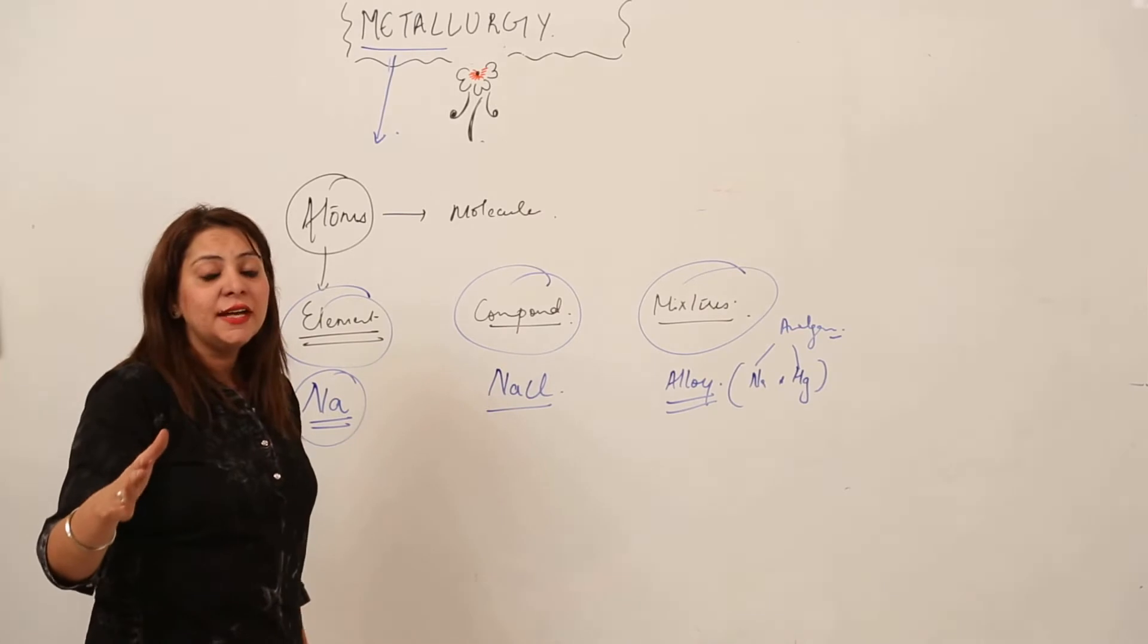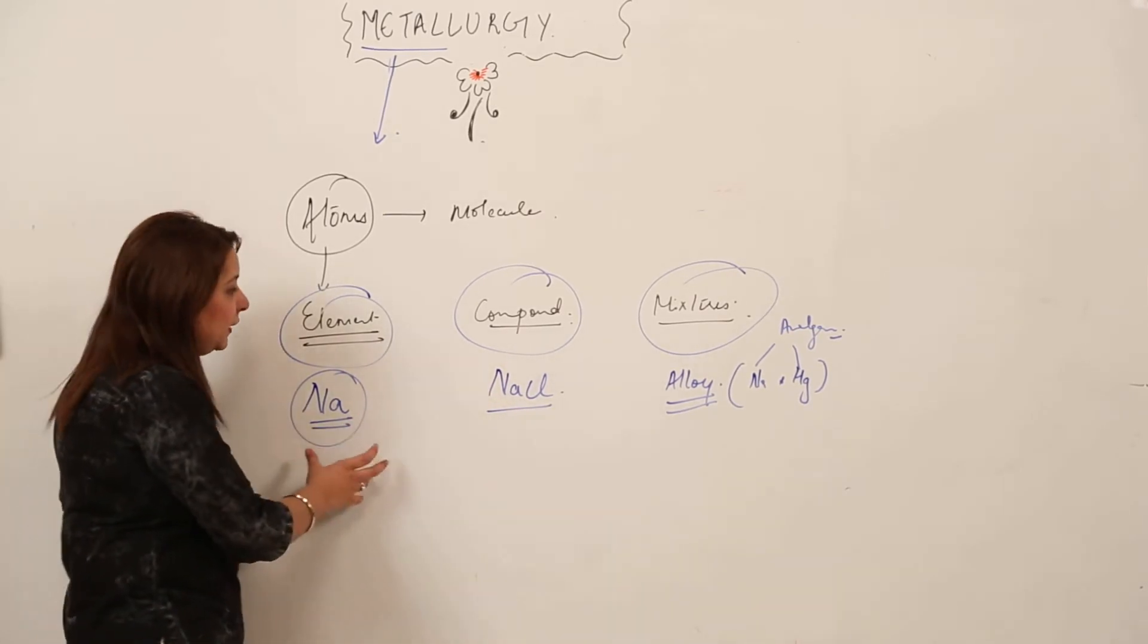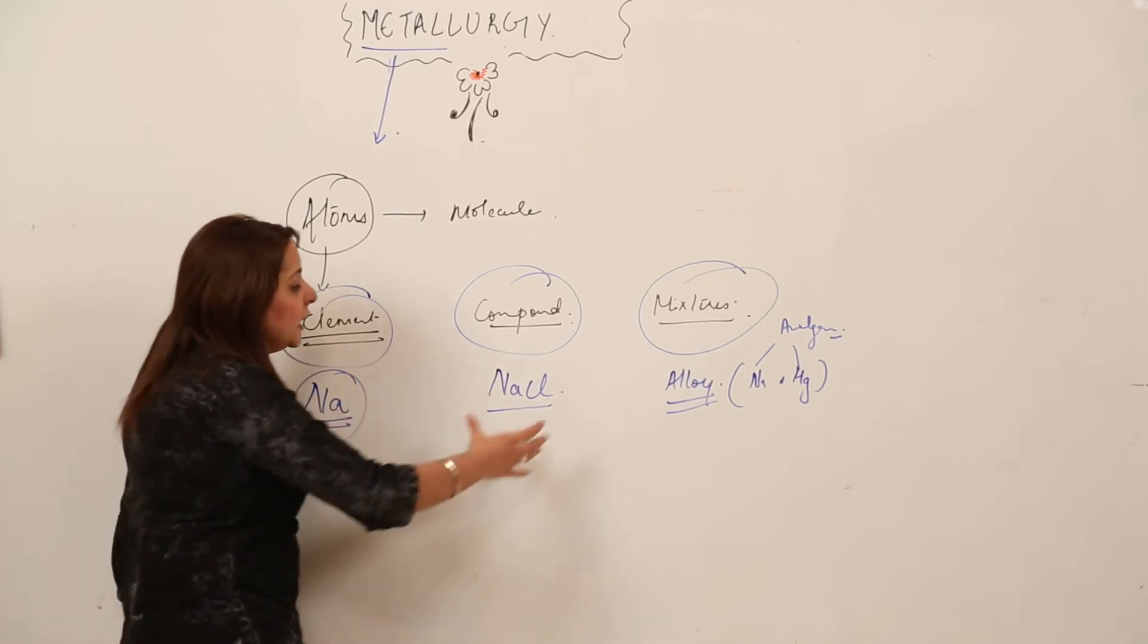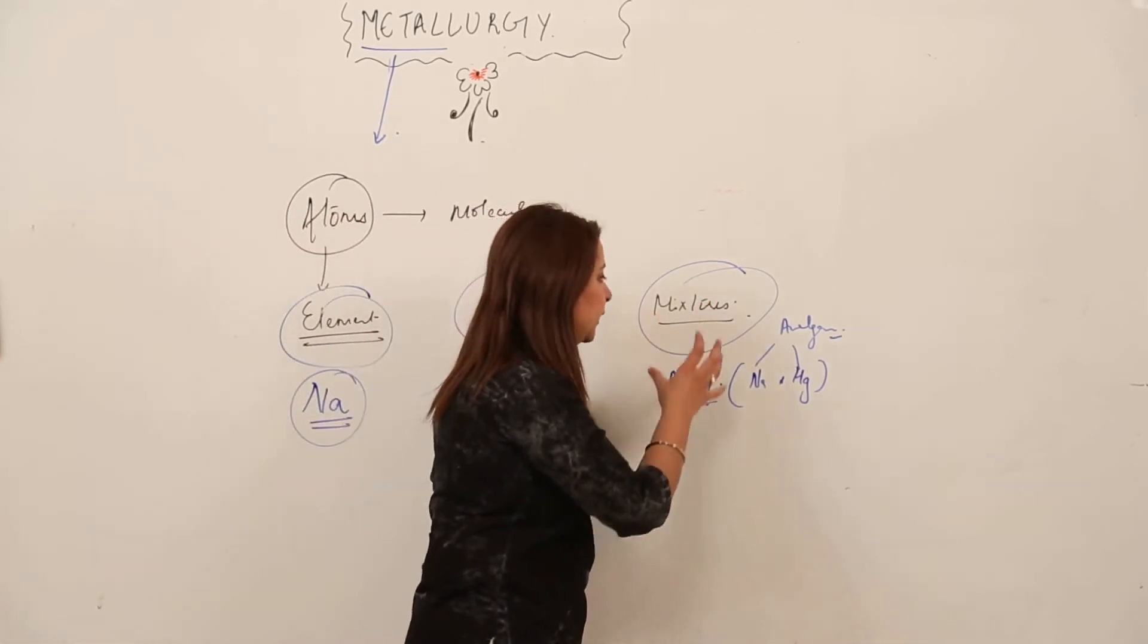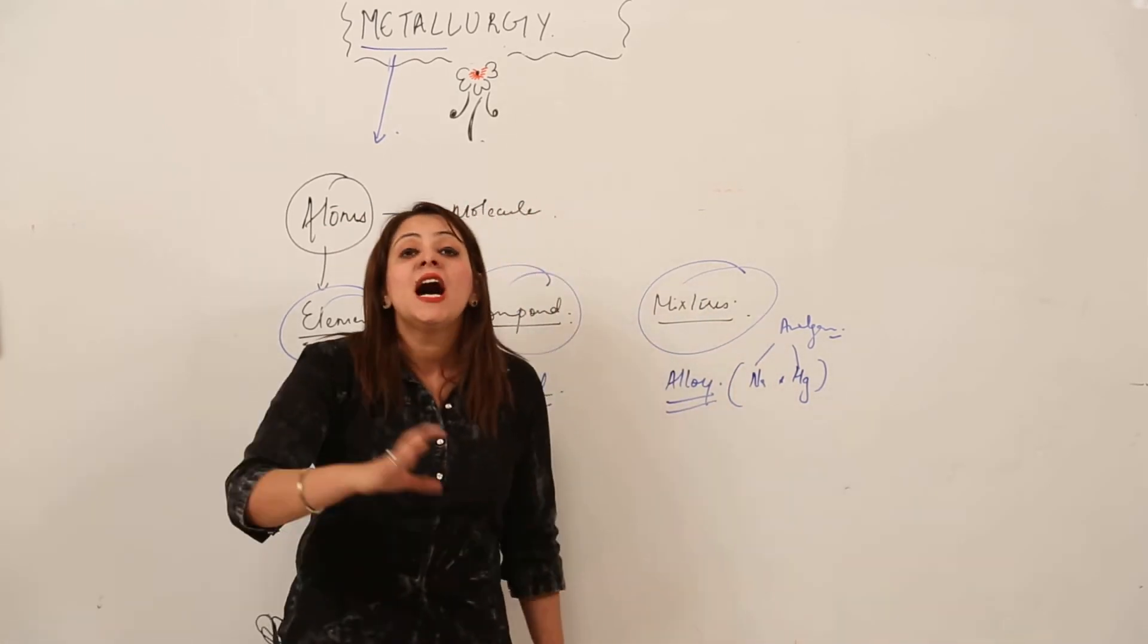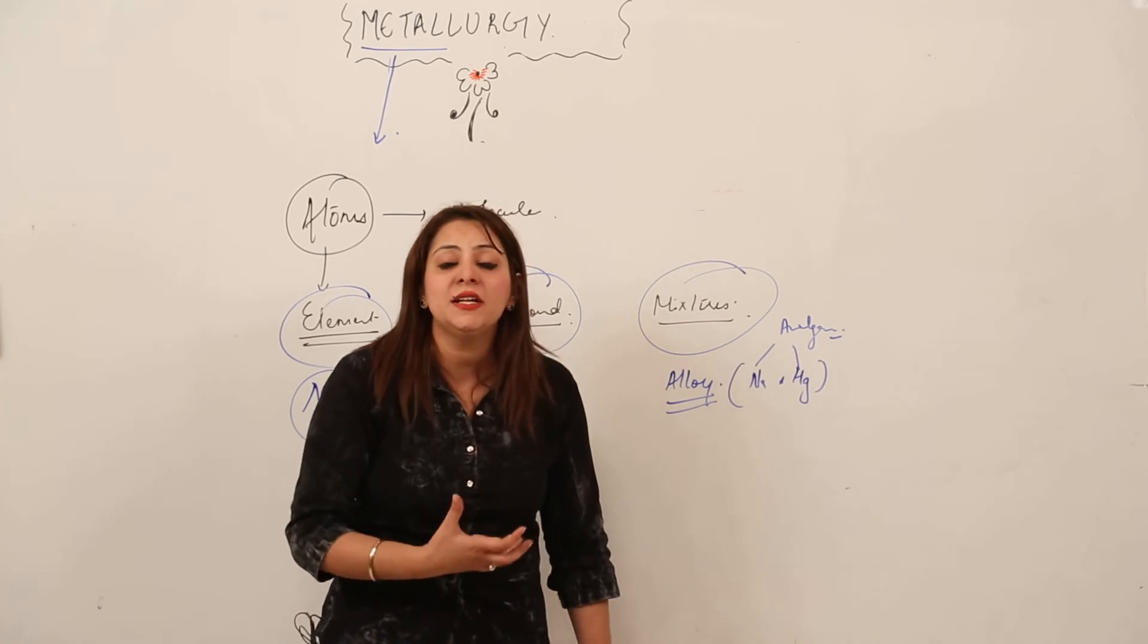You will be curious to know that these three, all the three examples which are stated, are just members of the metals. This is a metal element, sodium element. This is a metal compound, that is NaCl. And this is again an example of mixture, that is alloy. The alloy of mercury which is mixed with the metal sodium.